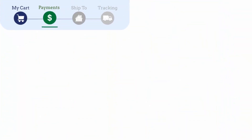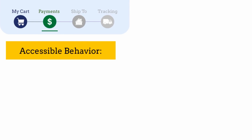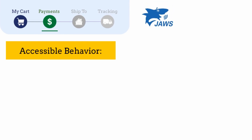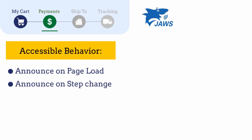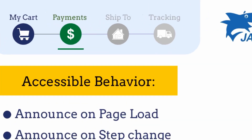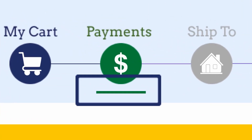First, let's discuss how a web accessible step progress bar should behave when interacting with assistive technologies. On page load, a screen reader such as JAWS should announce the current step the user is on. In a single page application where the page does not reload, JAWS should announce the updated step when the user moves to the next step. The step progress bar should also have a visual indicator of the current step to help users with colorblindness.